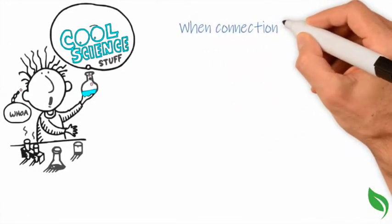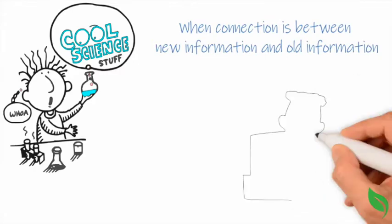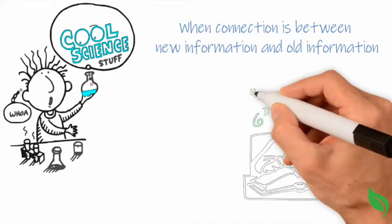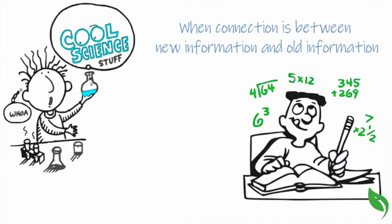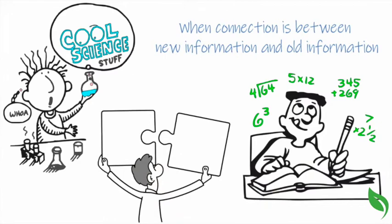When this connection is between new information and old information, it helps us remember new information by making connections in the brain to things we already know and remember well. This can also create the right connections between different pieces of information so that they can be more effectively remembered together.